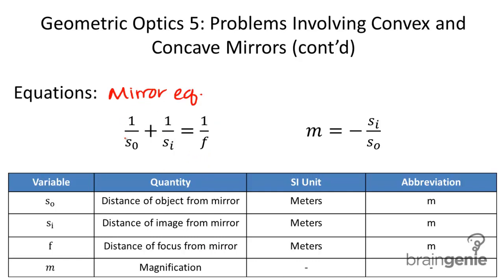Now, couple of important things. If Si in this case, if it's positive, that means that the image is real. If Si is negative, that means that the image is in fact virtual. Very important distinctions to make.